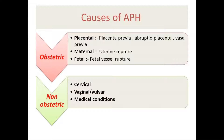The obstetric causes are further subdivided into placental, maternal, and fetal. The main placental problems include placenta previa and abruptio placentae. These two conditions account for about two-thirds of cases of antepartum hemorrhage.